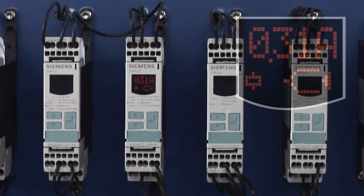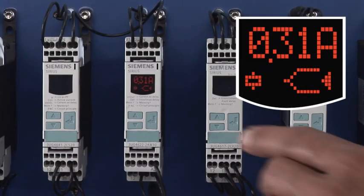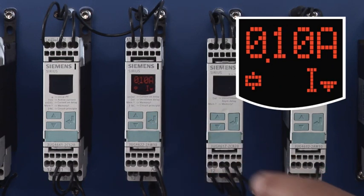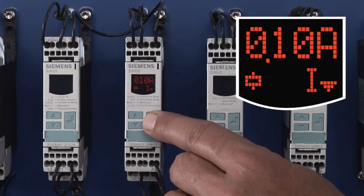The current monitoring relays come with a display for conveniently setting the monitored limits for overcurrent and undercurrent. The following settings are also made via this display.